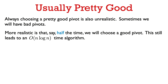Even this weakening is too strong — in real life we won't always choose a pretty good pivot; sometimes we'll have bad pivots. But even if half the time we choose a bad pivot, that's not really a problem: if half the time we pick a pretty good pivot and half the time a bad one, the running time is still O(n log n).